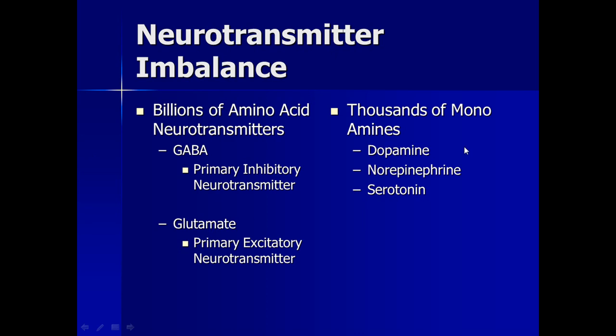The brain needs to know: do we need to hit the brake pedal or the accelerator pedal? The monoamine neurotransmitters determine whether you need to hit the brake pedal and, if so, how hard — do you need to tap the brakes or slam on the brakes? That's what the monoamines do.